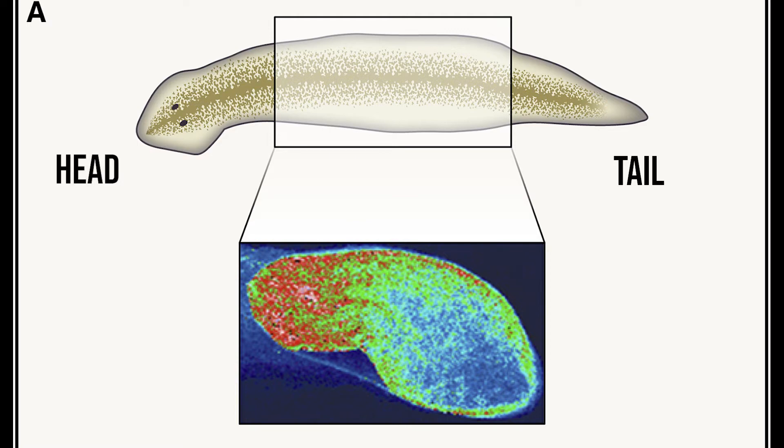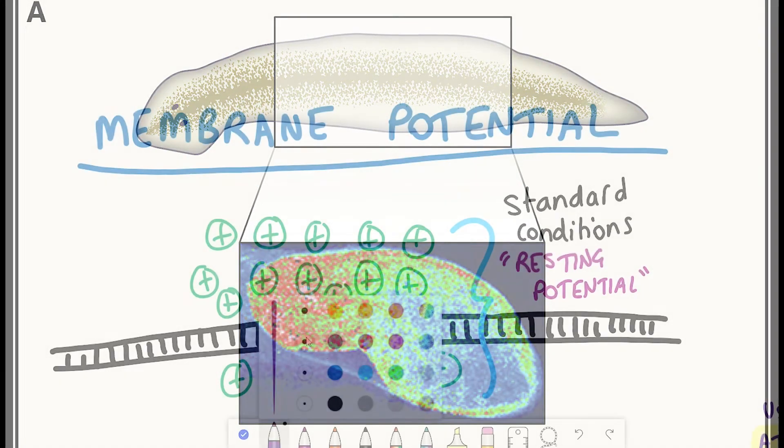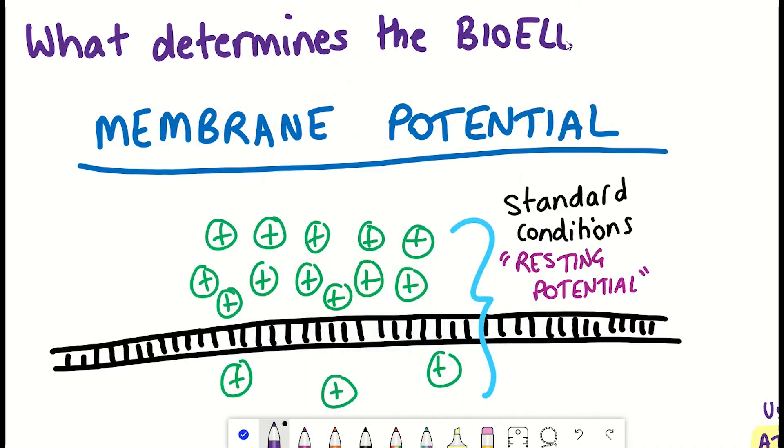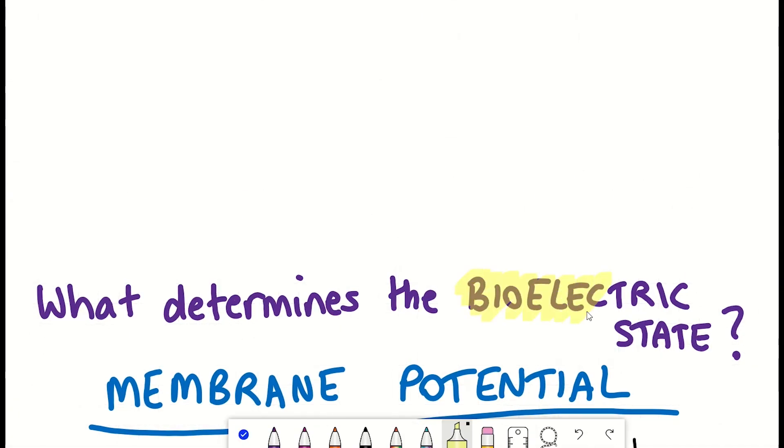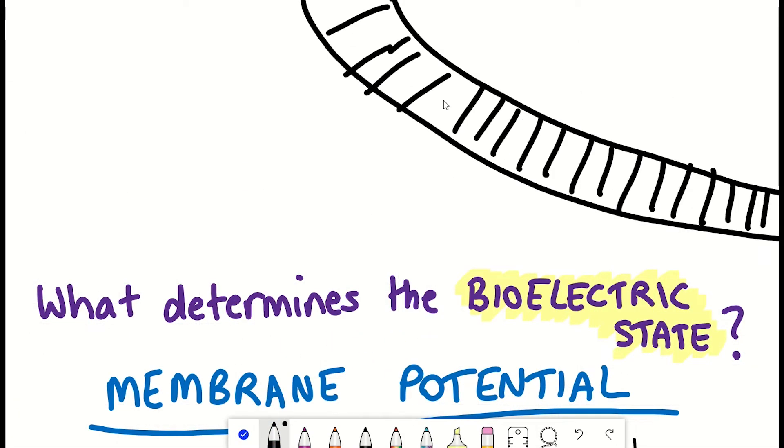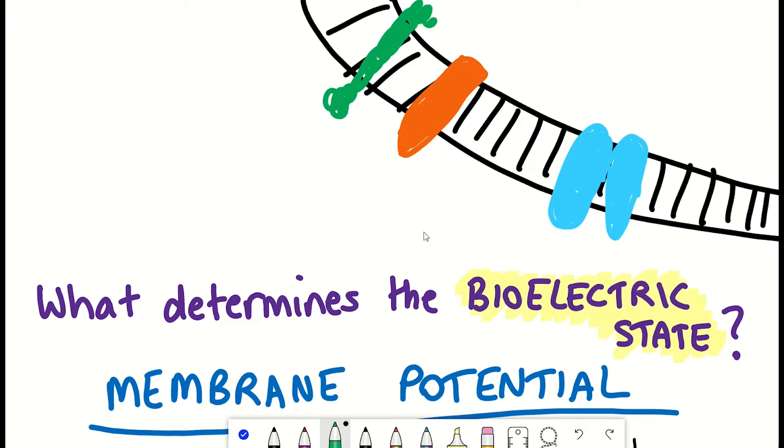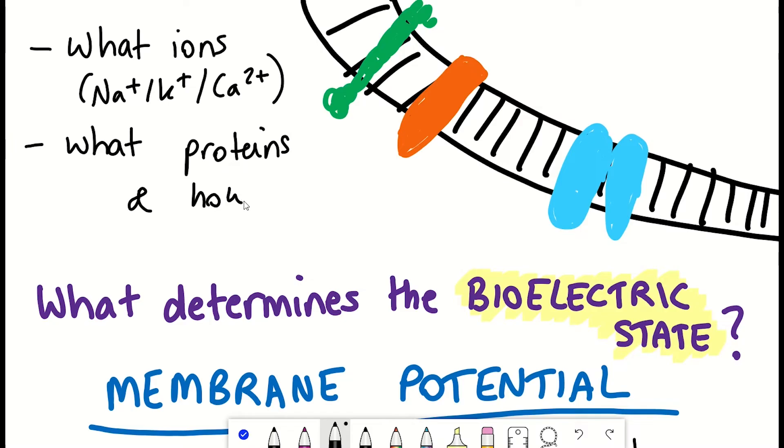So what then determines the bioelectric state? Well, quite simply, as I've mentioned, the membrane potential depends on which and how much of these ions are present within the cell. And that depends on what proteins are expressed in the membrane of these cells that control the transport of these ions. So the expression of the ion channel proteins. And so, what governs the expression of the ion channel proteins and their subsequent activation?